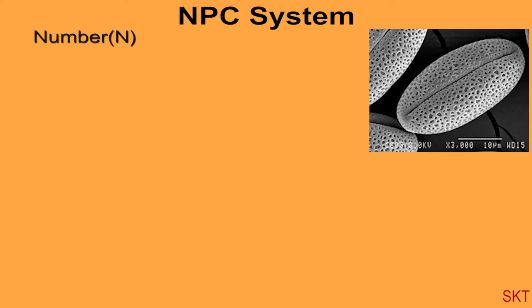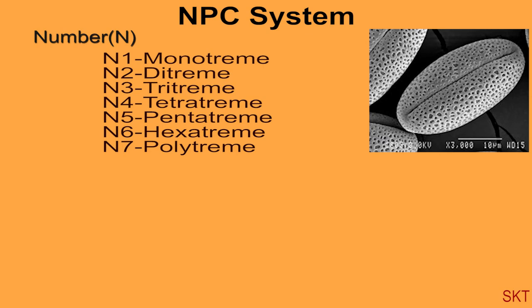N1 has one aperture, N2 has two apertures and so on. Each of these are named as N1 monotreme, N2 ditreme, N3 tritreme, N4 tetratreme, N5 pentatreme, N6 hexatreme and polytreme for N7.